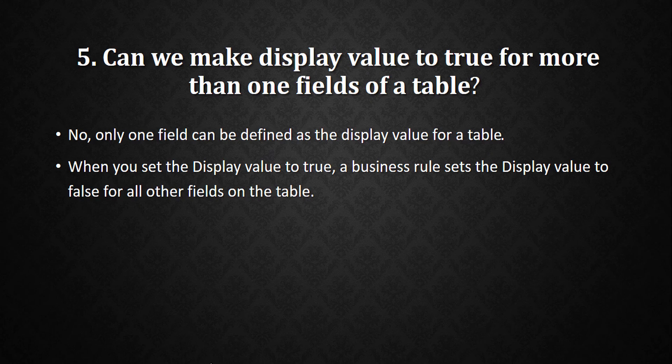The next question is: can we make display value true for more than one field of a table? The answer is no — only one field can be defined as the display value for a table. When you set display value to true for a field, a business rule automatically sets display value to false for other fields on the table. You can see this option in the table dictionary when you open a table's fields.